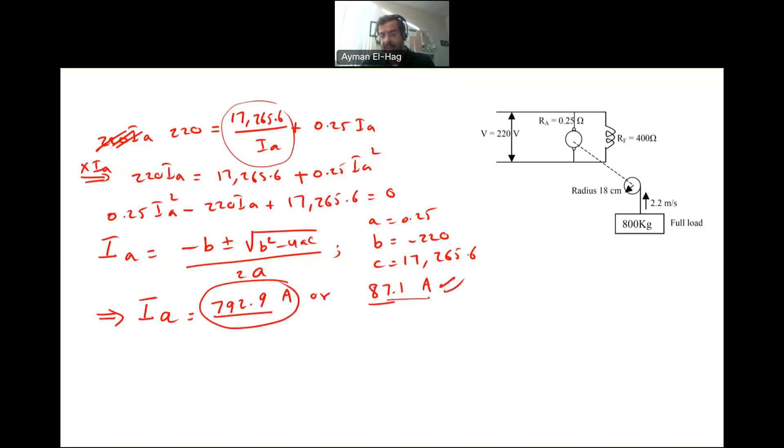Now, we have to use our common sense of engineering. We know from the previous question that that is not a typical value of an armature current. But this is more suitable. So this is the current that we will use. And from this, you will find that the EA is equal to 17,265.6 divided by IA by 87.1, which gives me the value equal to 198.23, which makes sense. We know that EA will be somehow closed to limit IA. If we use the other value, you will find that your EA is equal to only 21.77 volts, which doesn't make sense as a back EMF.